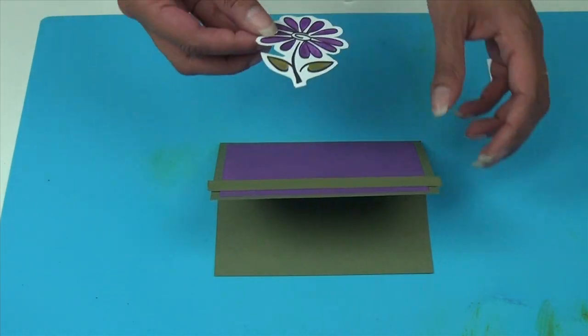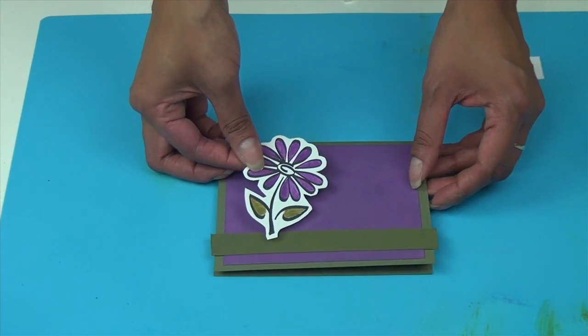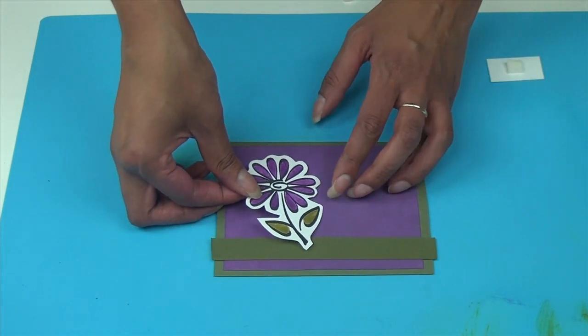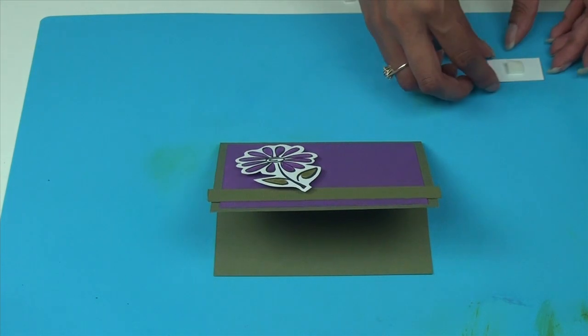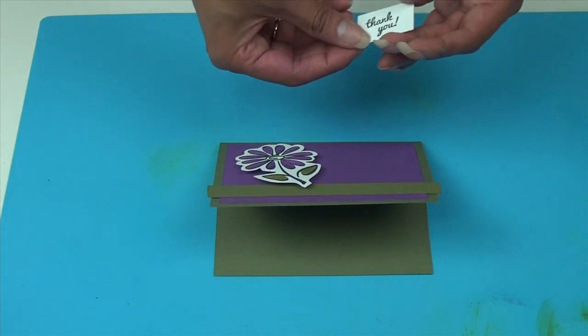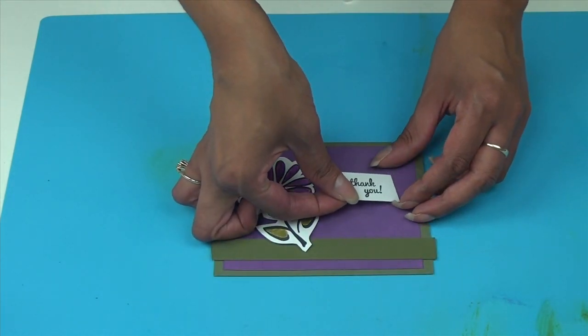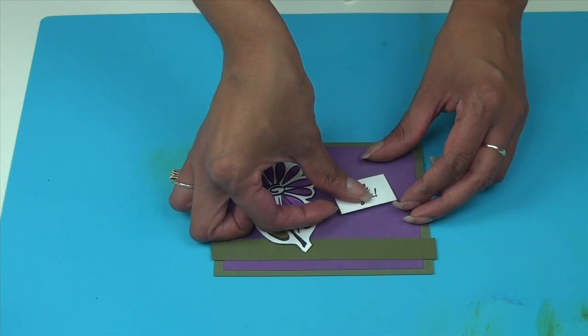Then for my flower, I've used dimensional adhesive on this. I'm just going to angle this maybe a little bit like that. And finally, my sentiment. I've also applied dimensional adhesive to that. Stick that right on there.